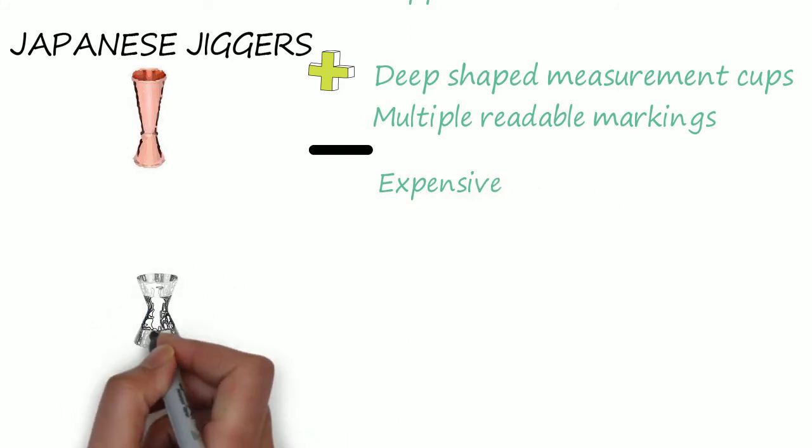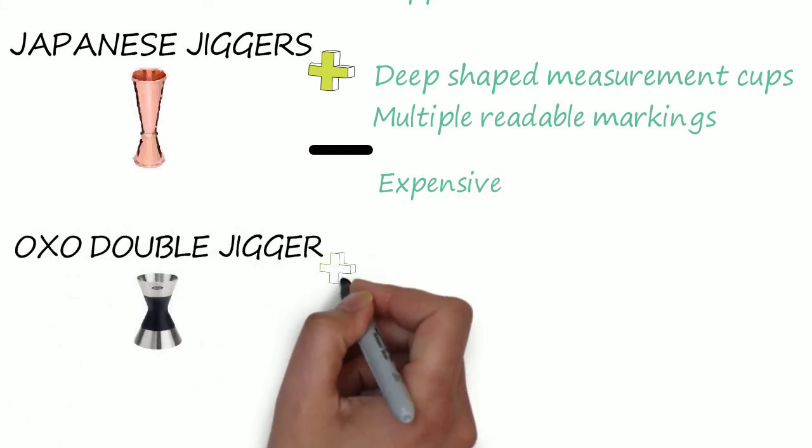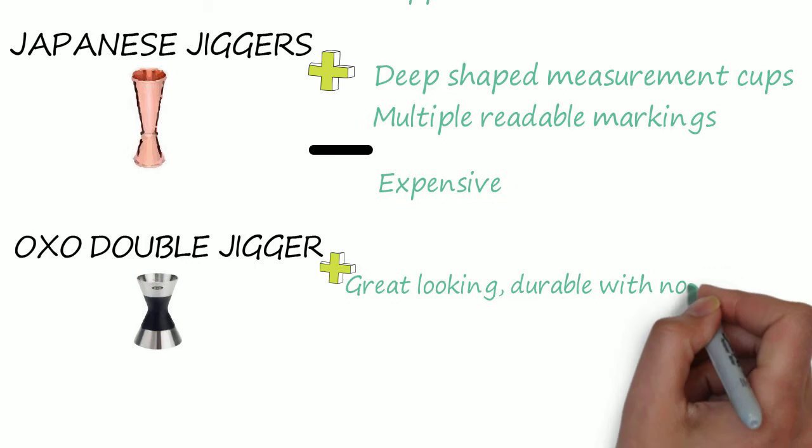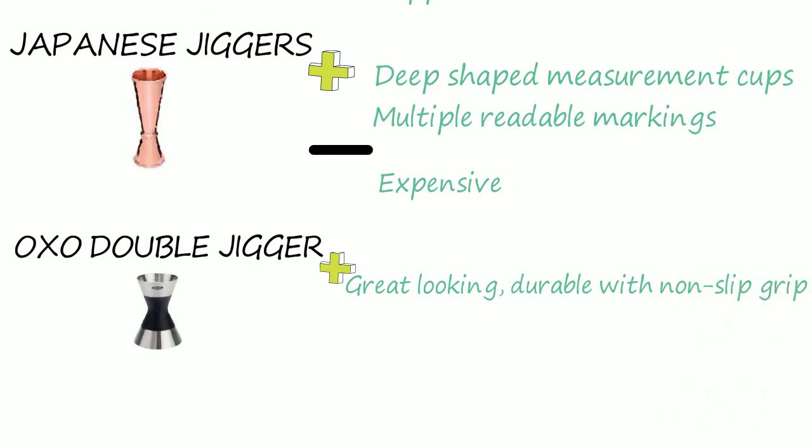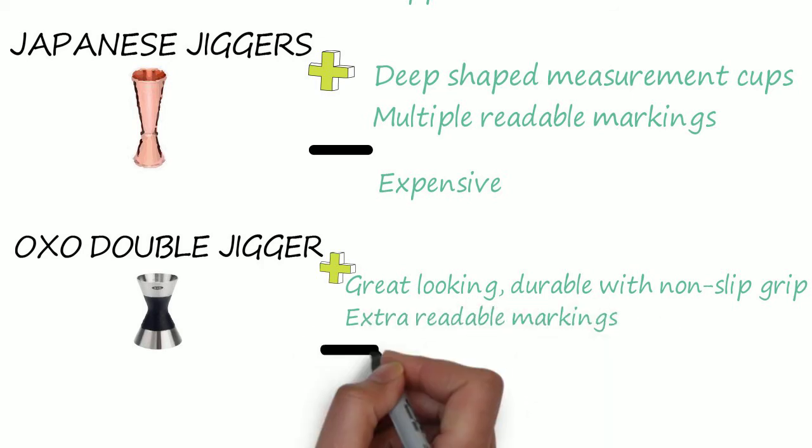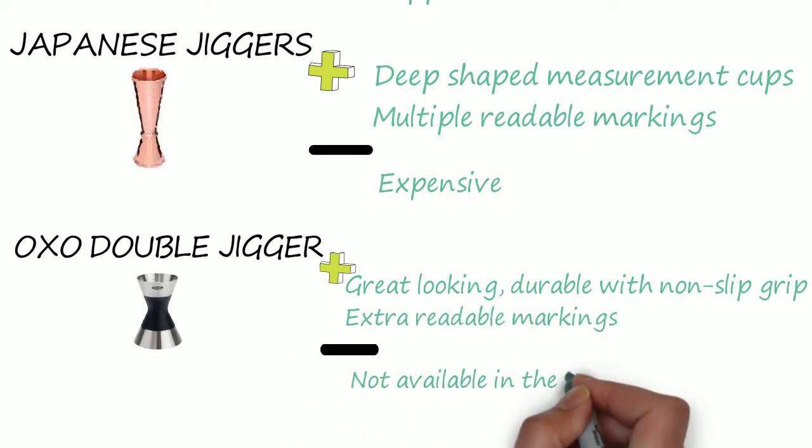Another great type is the OXO double jigger, which is great looking, durable, and has a non-slip grip which makes it easy to handle. Plus, it can be used for any measurement you need with a few extra readable markings. Unfortunately, I was not able to find this jigger on the UK market.